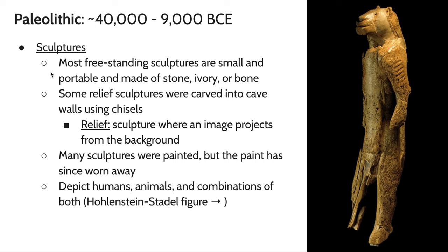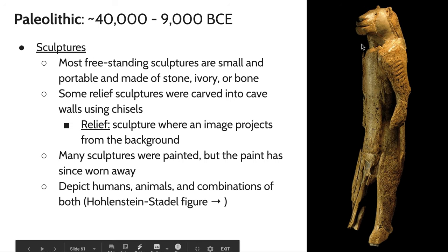Some sculptures are carved into cave walls using chisels, like a woman holding a bison horn. These objects came from hunter-gatherer, nomadic societies that traveled following food and seasons — so it didn't make sense to create large objects to carry around. As a result, sculptures from this era are relatively small. Many depict humans, animals, and combinations thereof, such as a figure with a human torso and legs but a lion-like head.